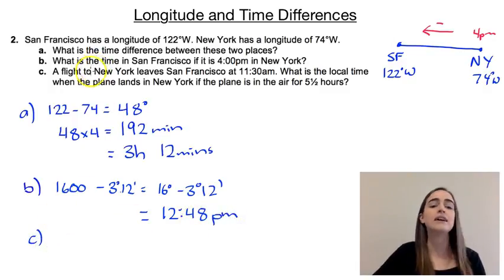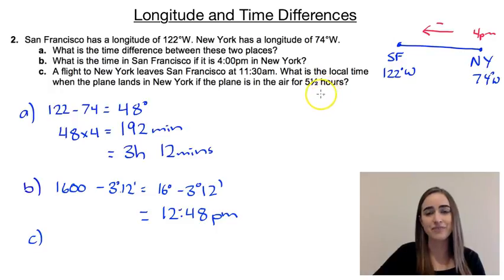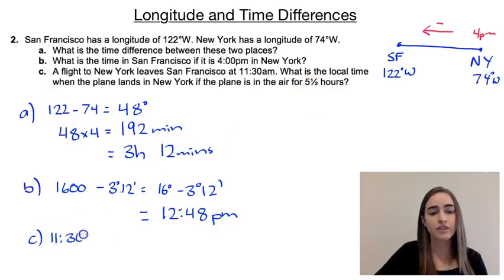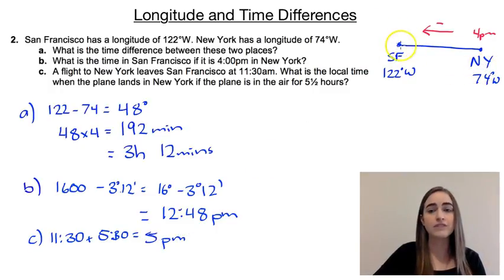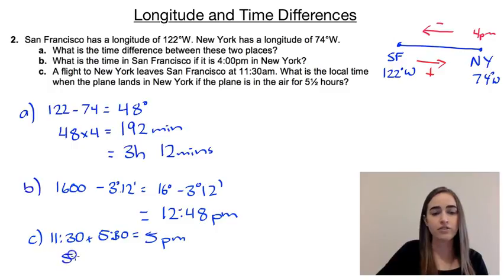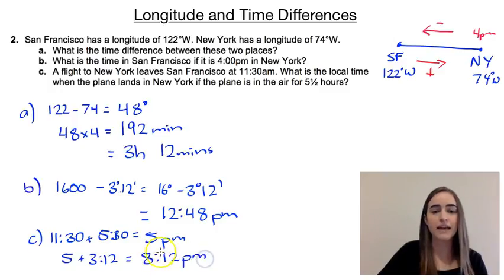For the last question, Part C: the first thing to do is figure out what time it is in San Francisco when the plane lands in New York. Starting at 11:30 and adding 5.5 hours of flight time gives us 5pm San Francisco time when the plane lands. Then we convert San Francisco time to New York time — moving east, we add the 3 hours and 12 minutes. So 5pm plus 3 hours and 12 minutes gives us 8:12pm, which is the time in New York when the plane lands.